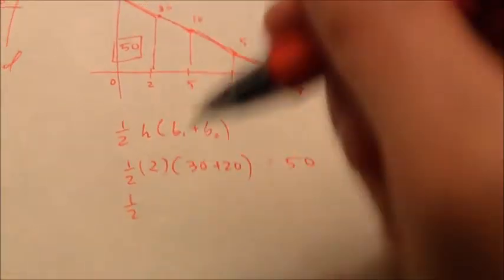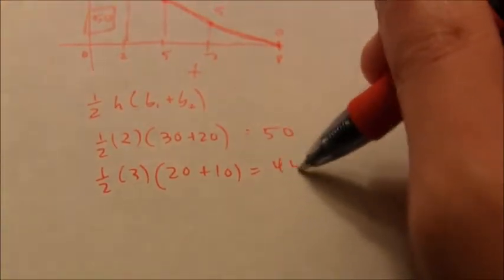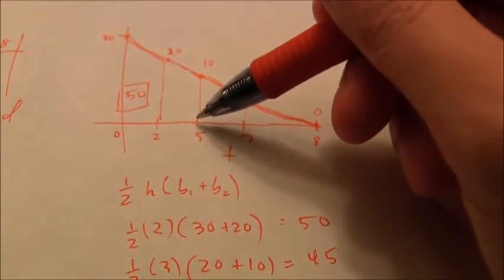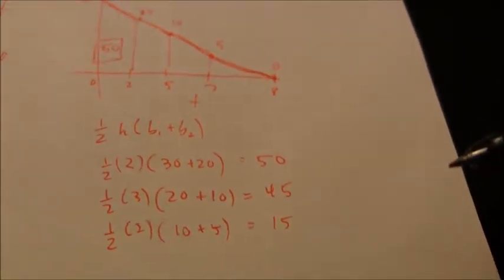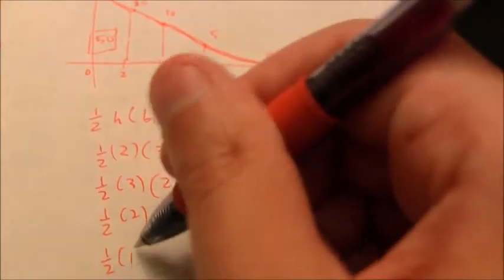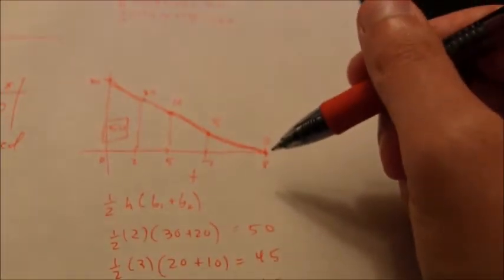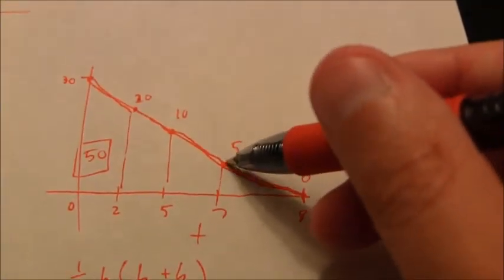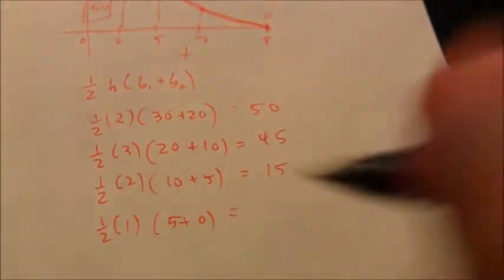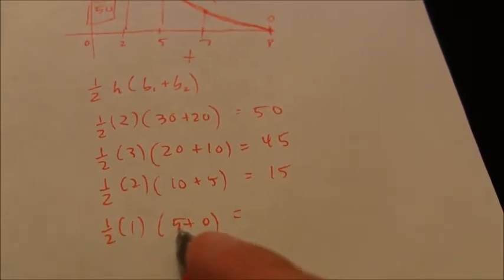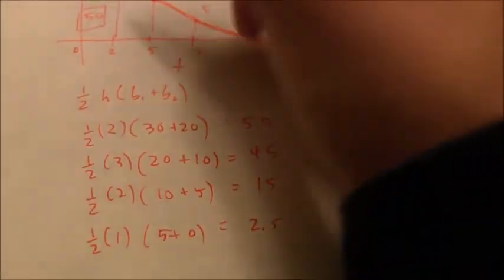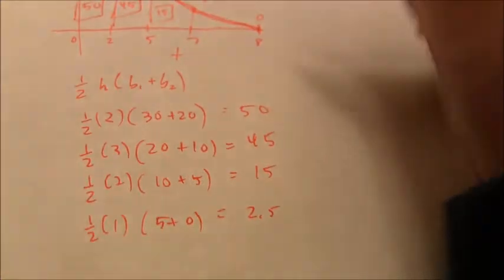For the second trapezoid, I have a height of 3 and base lengths of 20 and 10, which works out to be 45. For the third trapezoid, going from 5 to 7 seconds gives a height of 2, with bases of 10 and 5, so that's 15 units traveled. Finally, from 7 to 8 seconds, the height is 1 with bases of 5 and 0, giving an area of 2.5. So the areas are 50, 45, 15, and 2.5.